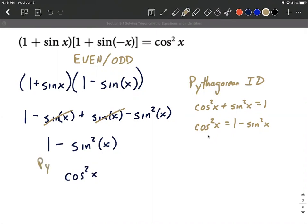Again, this was the Pythagorean identity, shorthanded there. That's what we wanted it to look like. We wanted to end up with cosine squared of x. That's what the right-hand side is here. So we've accomplished our goal.